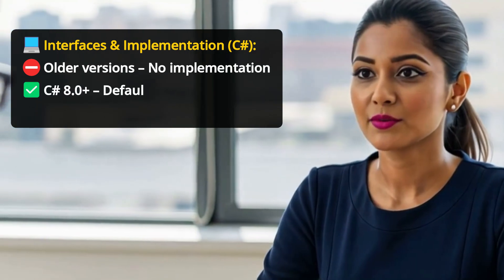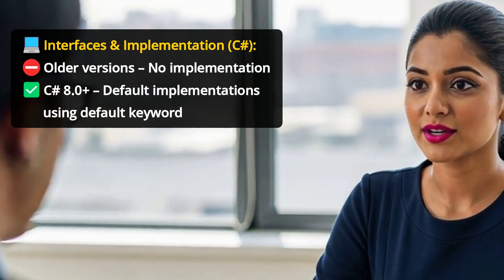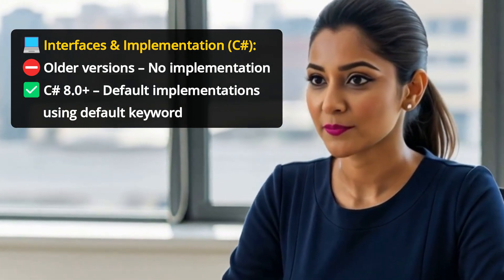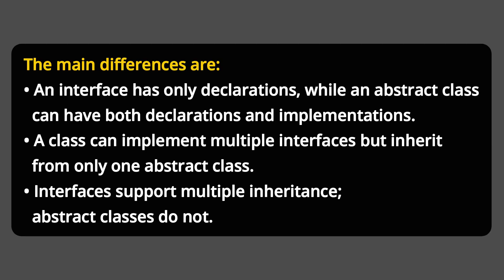Can interfaces have implementations? In older versions of C-Sharp, no. But starting from C-Sharp 8.0, interfaces can include default implementations using the default keyword. What are the key differences between an interface and an abstract class? The main differences are: an interface has only declarations, while an abstract class can have both declarations and implementations. A class can implement multiple interfaces but inherit from only one abstract class. Interfaces support multiple inheritance; abstract classes do not.